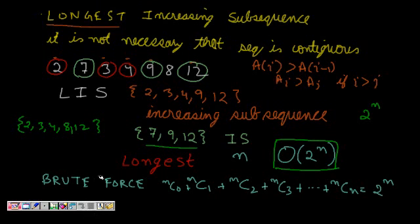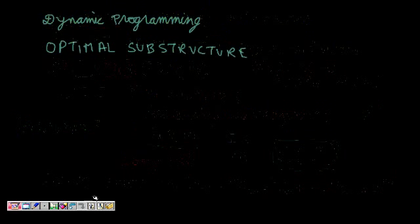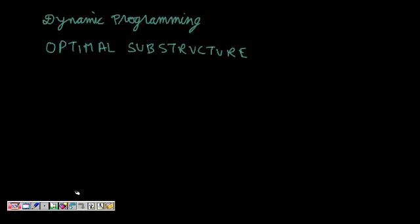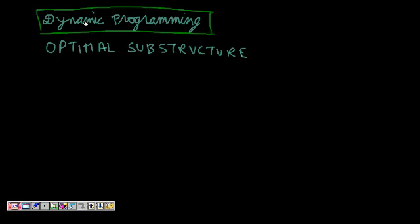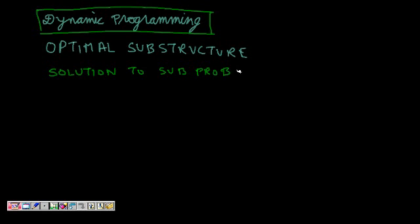Even though we have solved the problem, we have not come to an efficient solution. So we try to solve this using dynamic programming, which is one of the most powerful tools in computer science. It shows optimal substructure — if I have solutions to sub-problems already solved, can I use them to find solutions to bigger ones? We go bottom-up: solving smaller problems and using them to solve bigger ones.